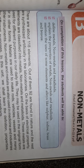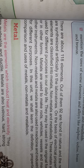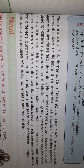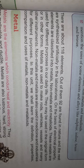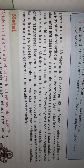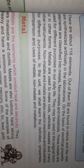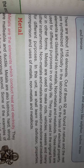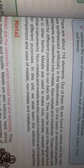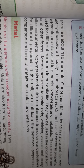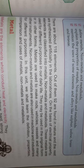Before that, there are about 118 elements in total. Out of them, 92 are found in nature and the remaining are made in the laboratory by scientists — they are artificially synthesized. Among these 118 elements, most of them are metals, some are non-metals, and very few are metalloids, and they are used for different purposes in our life.